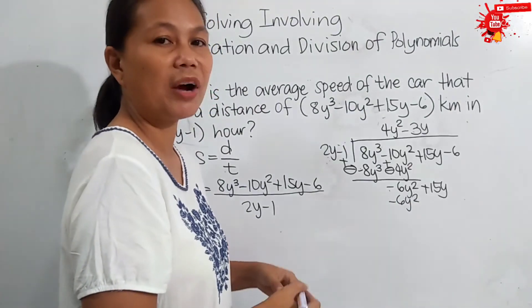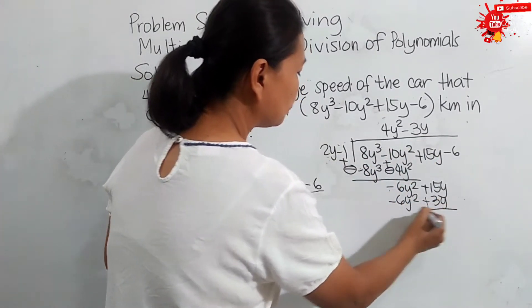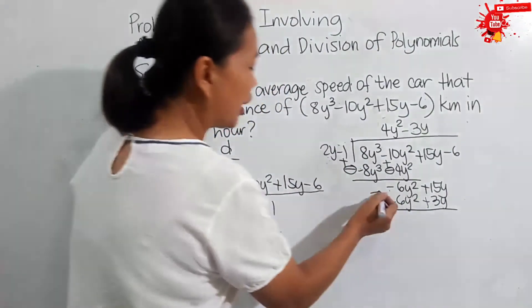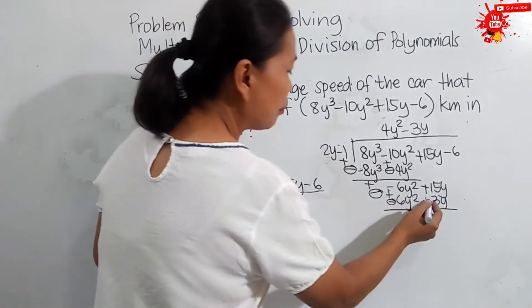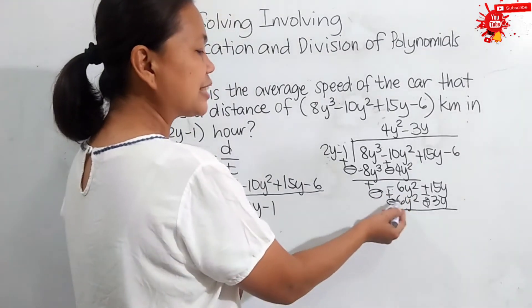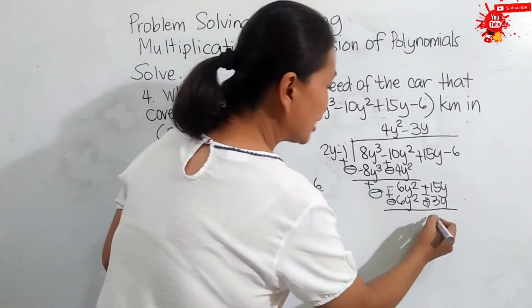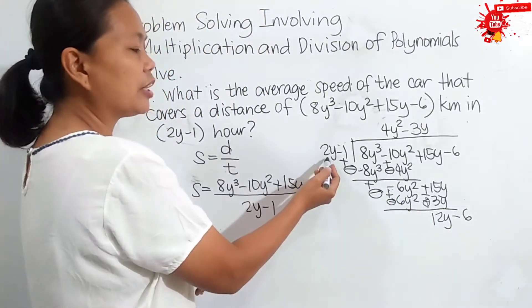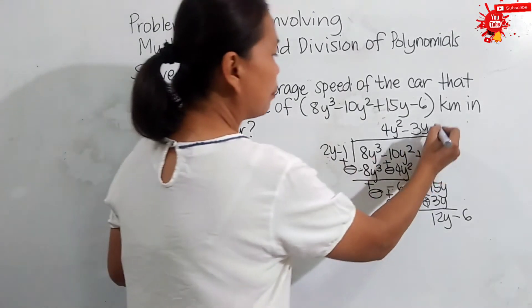We align negative 6y squared with negative 6y squared since they are similar terms. Then, negative 3y times negative 1 is positive 3y — aligned with 15y since they are similar. We proceed to subtraction: change to addition, making negative 6y squared into positive 6y squared and positive 3y into negative 3y. Negative 6y squared plus positive 6y squared is 0. Positive 15y plus negative 3y gives positive 12y. We bring down negative 6. Then, 12y divided by 2y: 12 divided by 2 is positive 6.